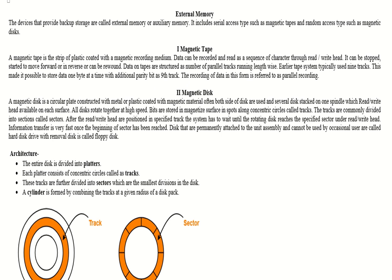The next question is: what is a magnetic disk? The magnetic disk is a circular plate constructed with metal and plastic, coated with a magnetic material on both sides. The disks are stacked on a spindle with a read-write head on each surface, meaning every surface has one read-write head on both sides.